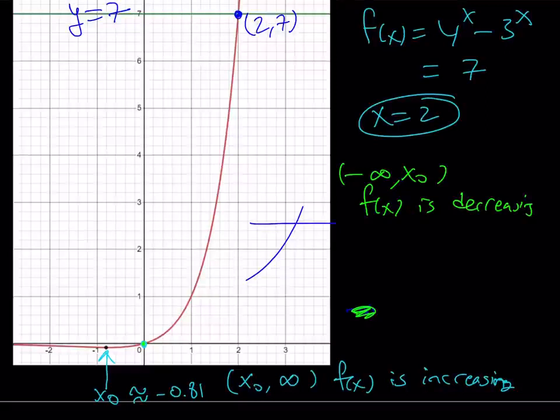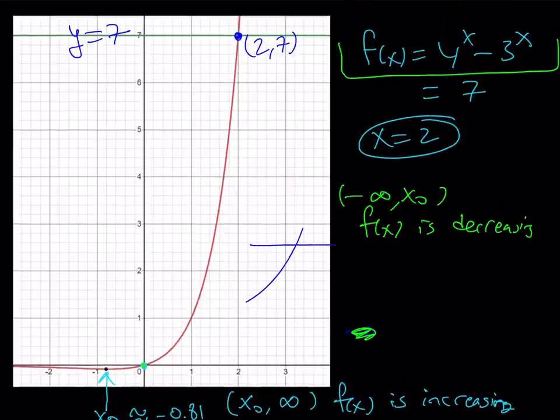So what happens if x approaches negative infinity? Well, you can easily take the limit of this function as x approaches negative infinity, and you're going to notice that it's going to approach 0. So our graph is going to approach the x-axis. The x-axis, in other words, is going to be an asymptote for our function. Therefore, there is no way it's going to cross the x-axis anymore and hit y equals 7 anywhere. So this means that x equals 2 is the only solution.